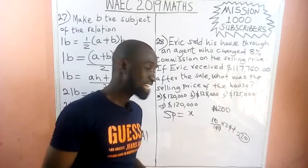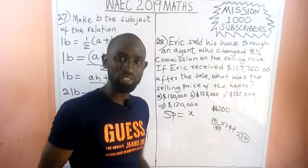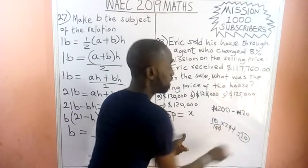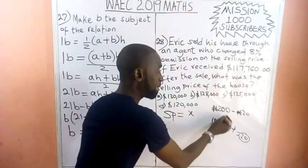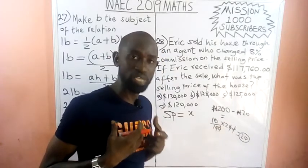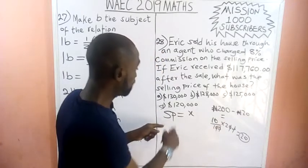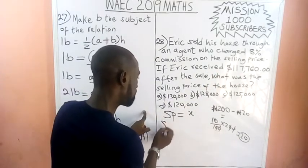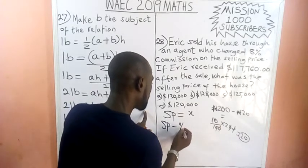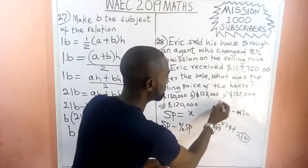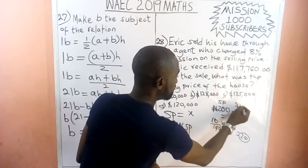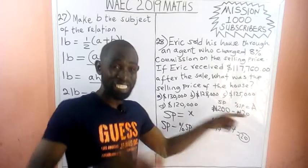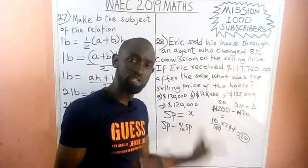After the agent has removed $20, he gives me the remainder. So: selling price minus percentage of selling price equals the amount I will receive. In Eric's case: selling price minus the agent's commission equals what Eric received.